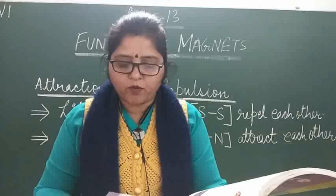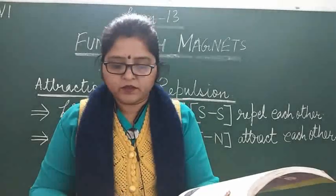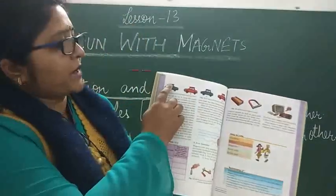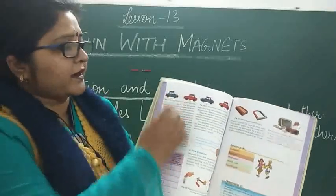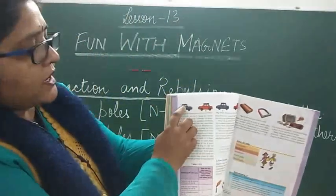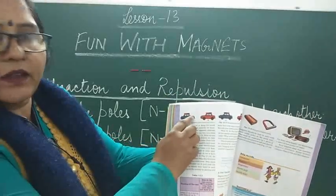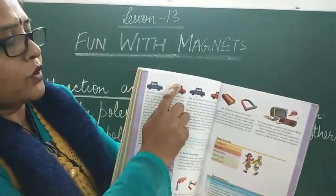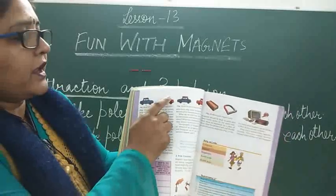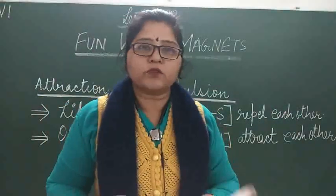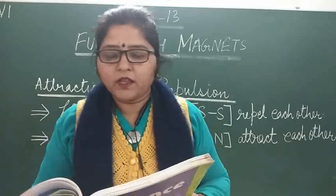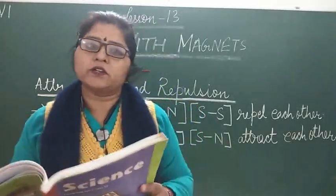Take two small toy cars and label them A and B. Place a bar magnet on top of each car along its length and fix them with rubber bands. We use red color to indicate the north pole and blue color to indicate the south pole.